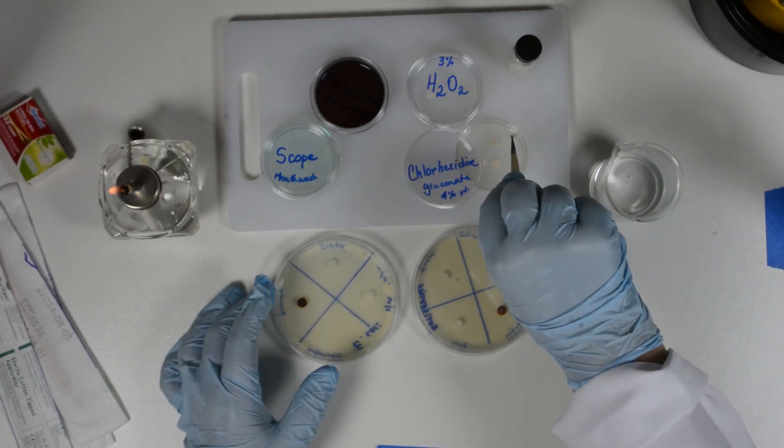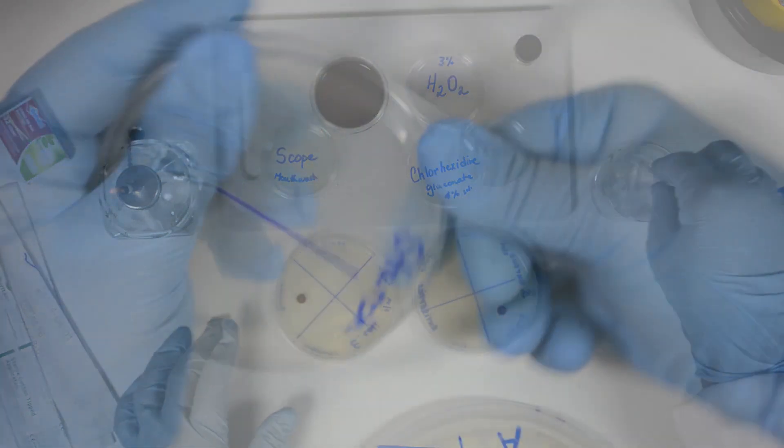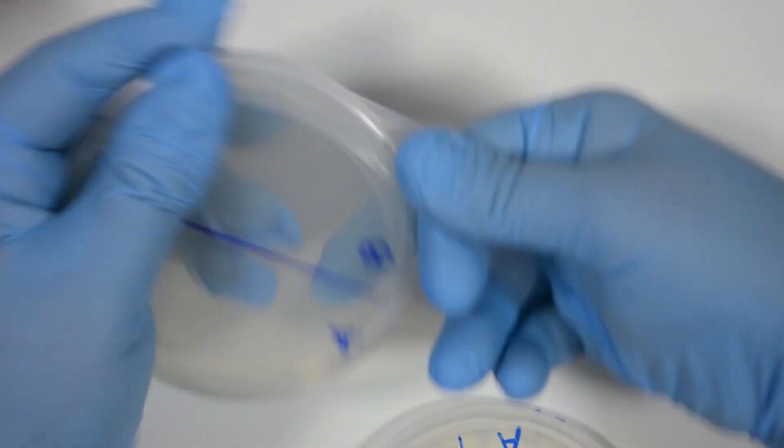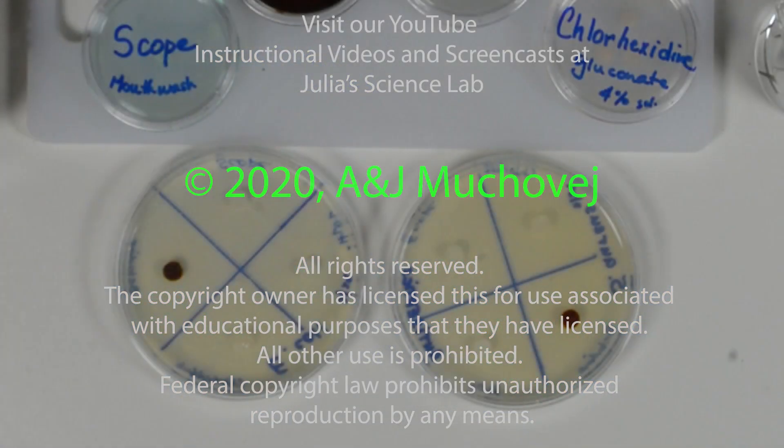Repeat until all four chemicals are in place for the two pairs of plates set up. Seal the plates with parafilm, invert them, and incubate at 35 degrees Celsius for 16 to 18 hours.